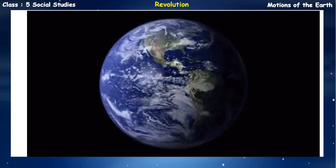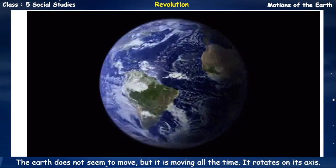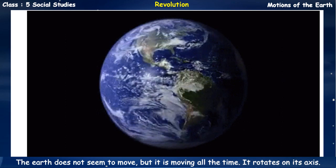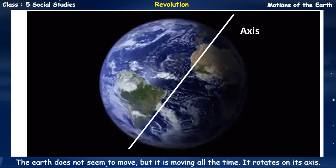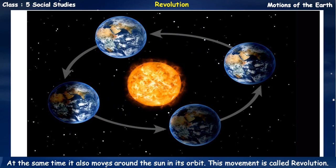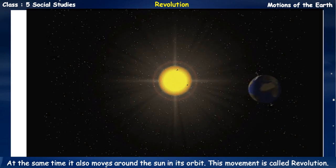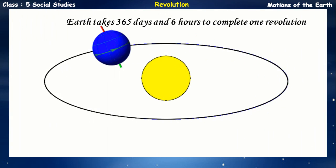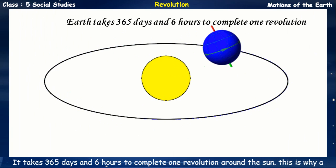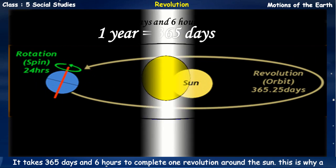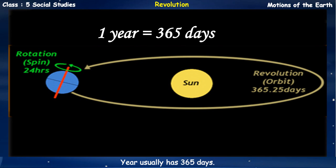Revolution. The Earth does not seem to move, but it is moving all the time. It rotates on its axis, and at the same time it also moves around the sun in its orbit. This movement is called revolution. It takes 365 days and 6 hours to complete one revolution around the sun. This is why a year usually has 365 days.